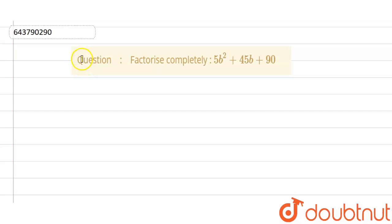Welcome to Doubtnet. The question that was given to us was factorize completely 5b² + 45b + 90. So it was given that 5b² + 45b + 90.